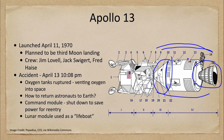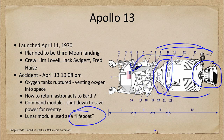So essentially the command module had to be shut down, and the astronauts moved into the lunar module and used that as a lifeboat. The lunar module had enough material for two people to survive on the moon for a couple of days, and now they used it for all three astronauts to travel around the moon and come back to earth.